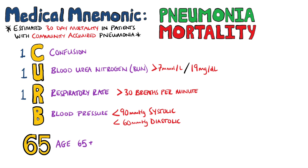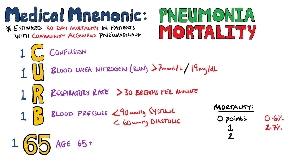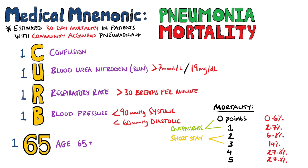For each one of the above that the patient has, they get 1 point, for a maximum of 5 points. A patient with 0 has a 0.6% chance of mortality at 30 days. A score of 1 gives a 2.7% chance. Typically, patients with scores of 0 and 1 are treated as outpatients. A score of 2 correlates to a 6.8% chance of mortality at 30 days, and 3 points is approximately 14% mortality. Patients with 2 or 3 are usually considered for a short hospital stay.